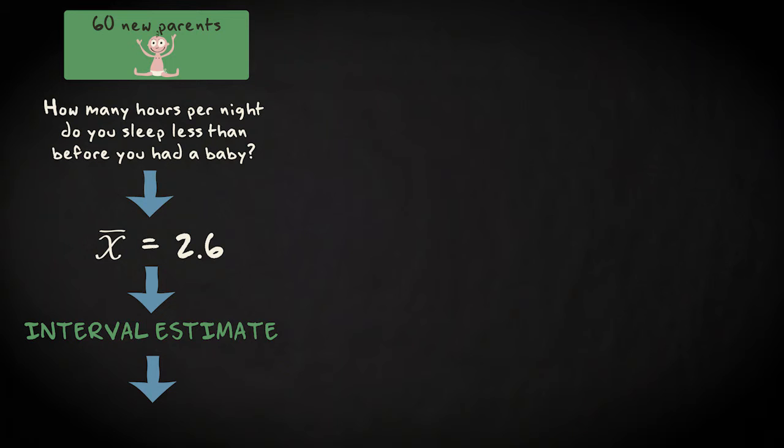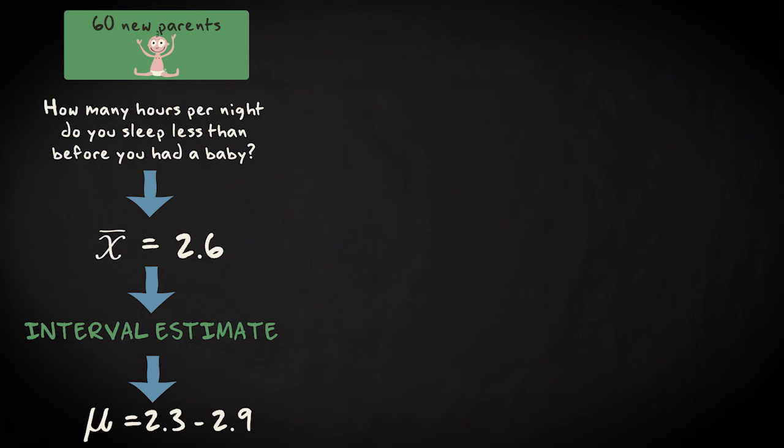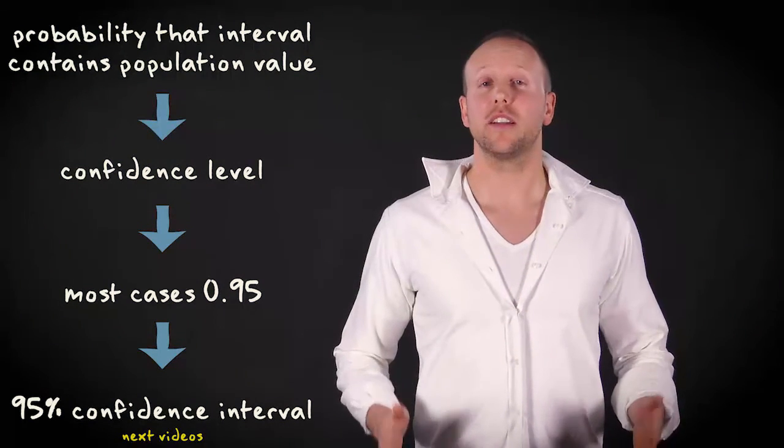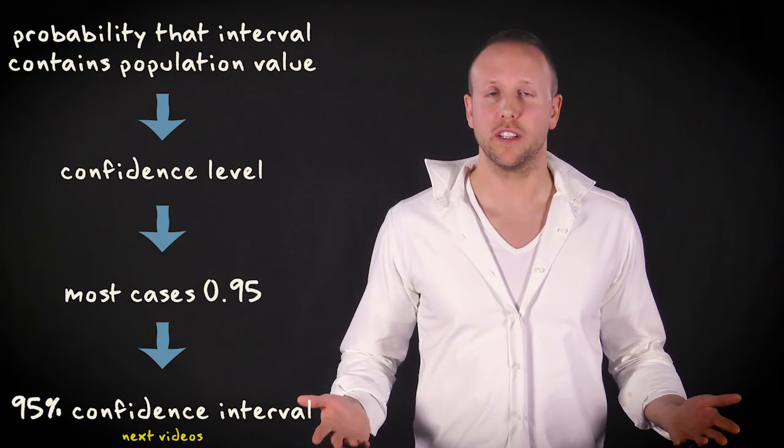On the basis of our sample mean of 2.6 hours, we might predict, for instance, that the mean lost sleeping hours of all new parents in Amsterdam lies somewhere between 2.3 and 2.9. The probability that the interval contains the population value is what we call the confidence level. The confidence level always has a value close to 1. In most cases, it's 0.95. In that case, we'll talk about a 95% confidence interval. In the next videos, I'll discuss how we can construct such confidence intervals.